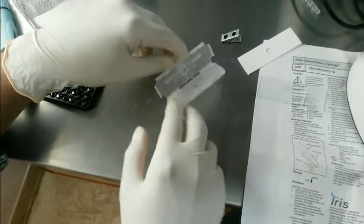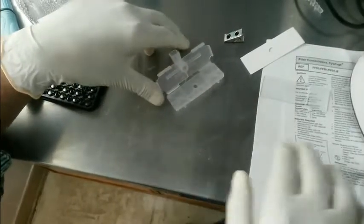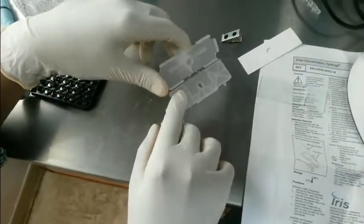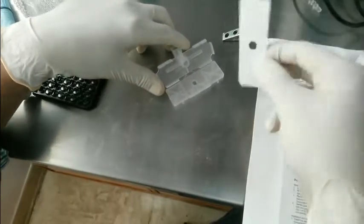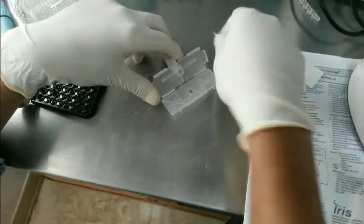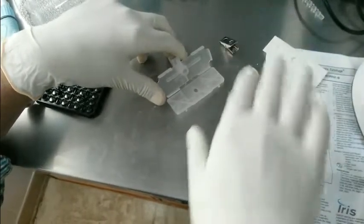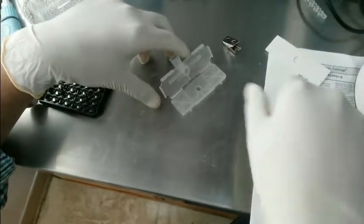Now we are making a slide for the Cytofuge 2. Here we have a filter concentrator, here we have a filter paper, this is the glass slide and this is the metallic clip which is provided with the system.